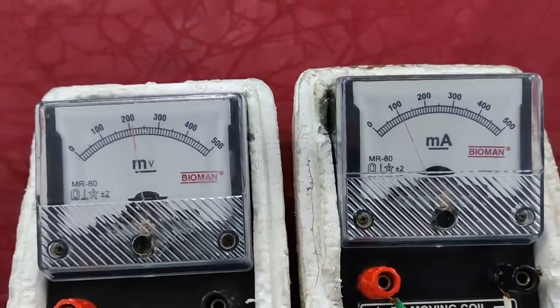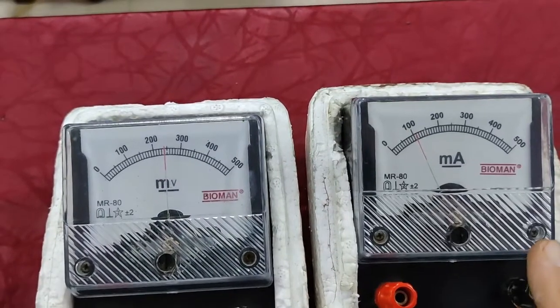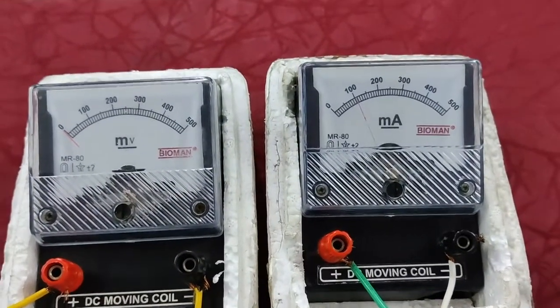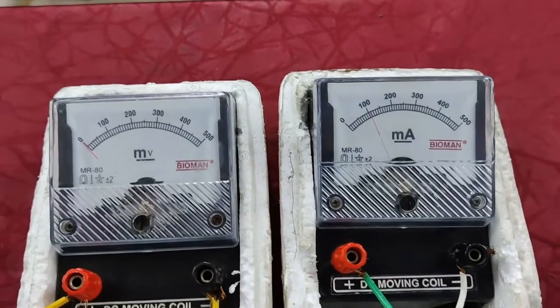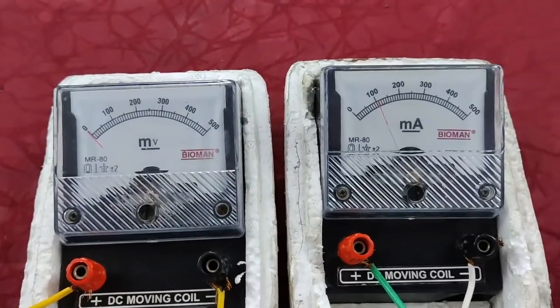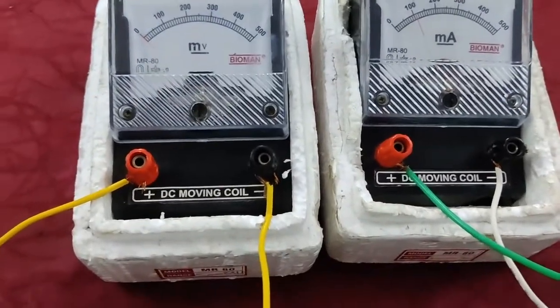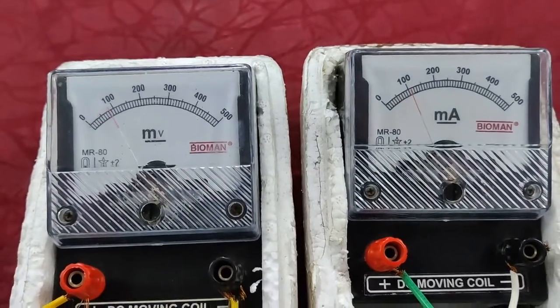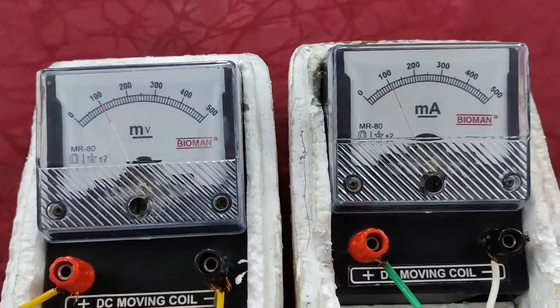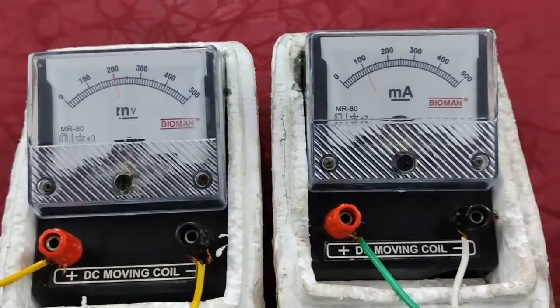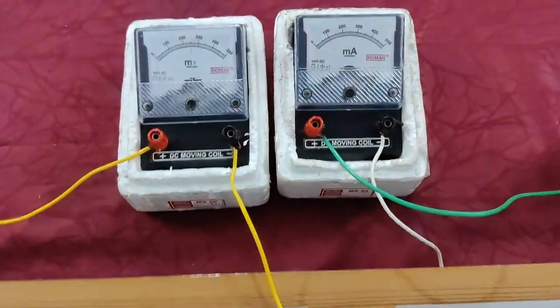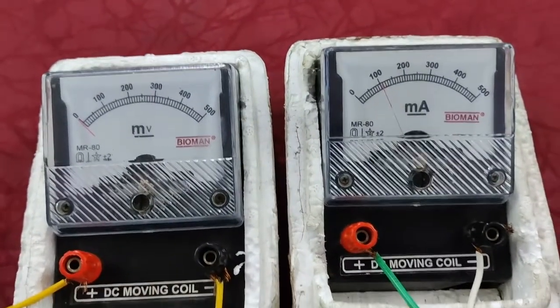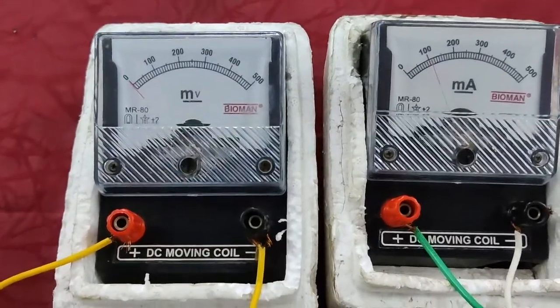You can see as length increases, the reading of the voltmeter also increases but current remains constant. Potential gradient, the potential drop per unit length of a particular wire, is called potential gradient K. So K is fixed and if the length is fixed then the potential drop will be fixed. Now let's see at 10 cm, then at 30 cm, then at 50, then at 70. By this experiment we come to the conclusion that with the increase of length, potential drop also increases but potential gradient remains constant.